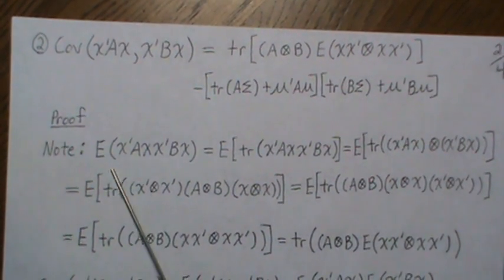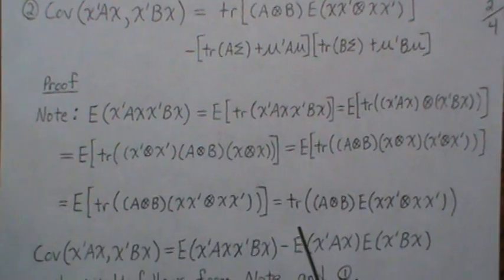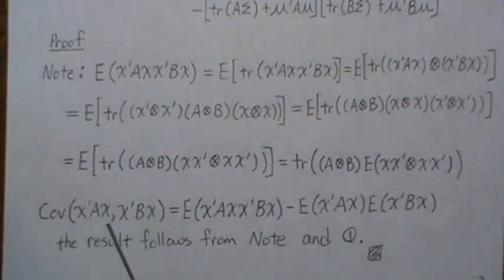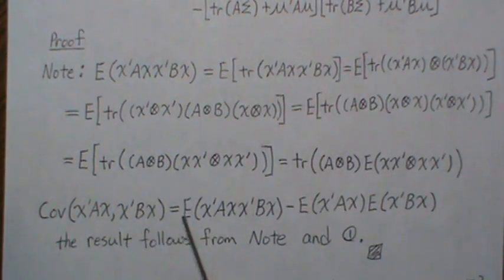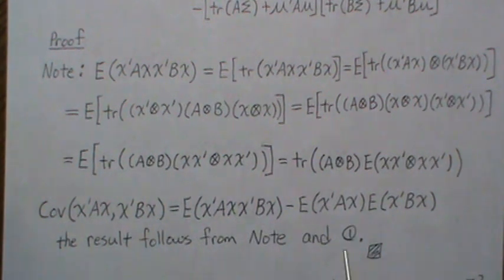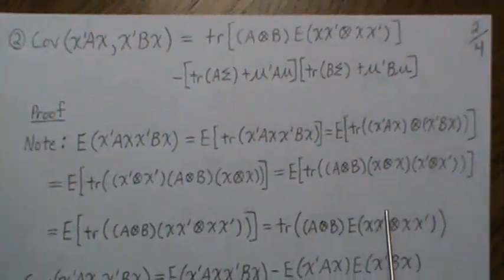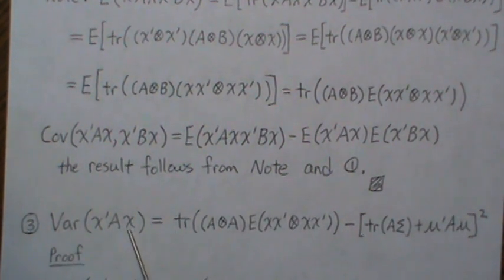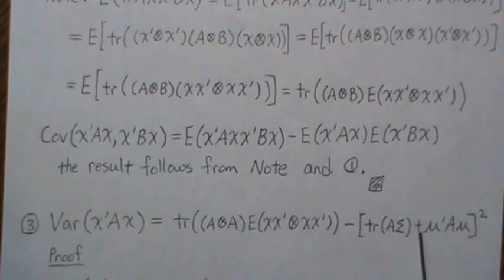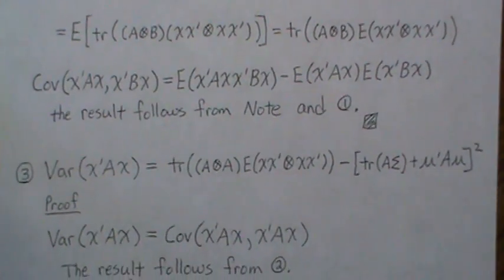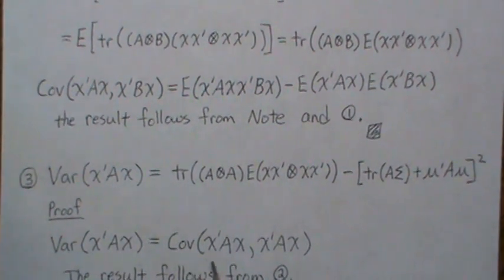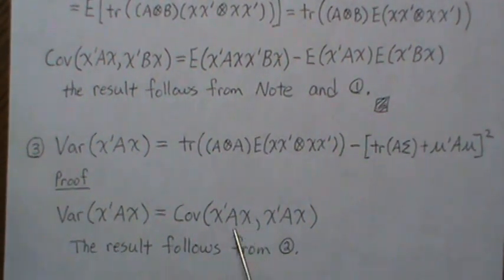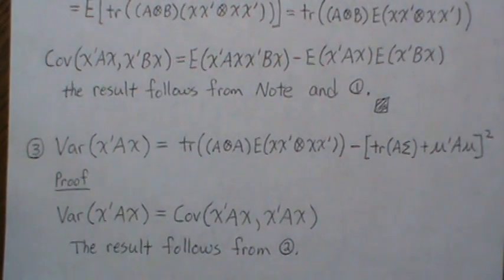That gives us a generic form for E[x'Ax · x'Bx]. Now the covariance between two quadratic forms equals the expected value of their product minus the product of their means. Using this result and plugging in the formula for the mean of a quadratic form, we get the covariance result. The variance of a quadratic form follows directly by setting A equal to B in that covariance formula.